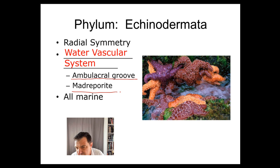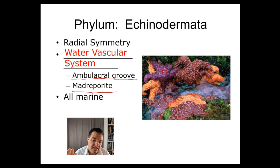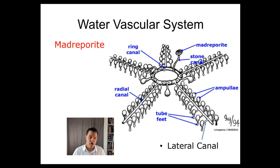They have a structure called a madriporite — I think it's that cream-colored thing in the center here. It's like a little plate on top of the sea star, and it's where water goes into the water vascular system. All Echinodermata are marine. We'll take a look at this water vascular system a bit more.